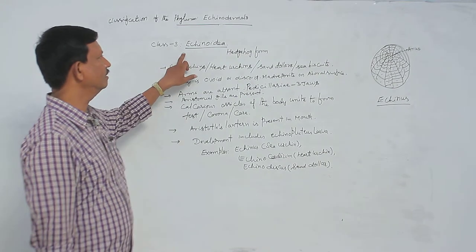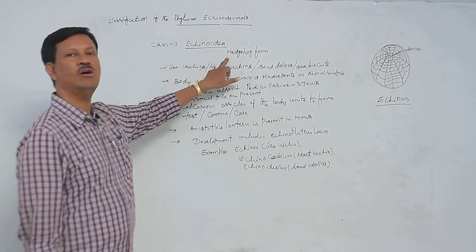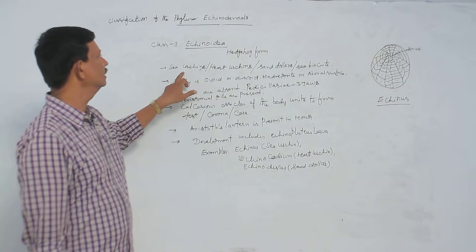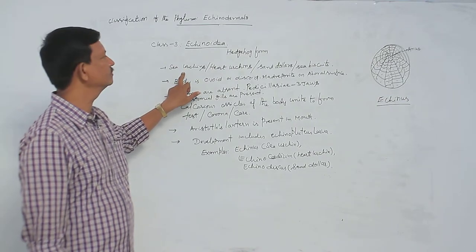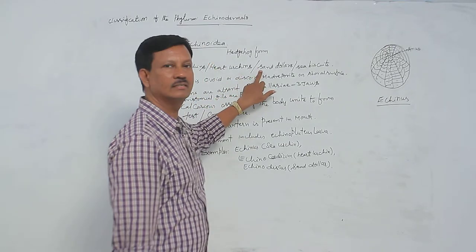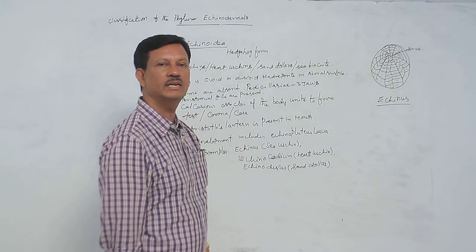Class Echinoidea. These are commonly known as hedgehog forms. Other names include sea urchins, heart urchins, sand dollars, or sea biscuits. There are different common names.